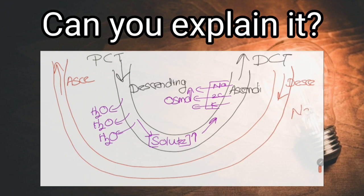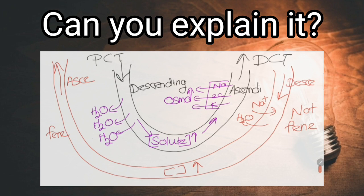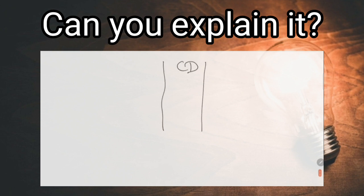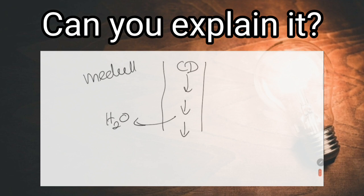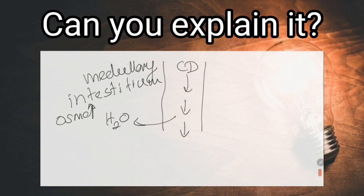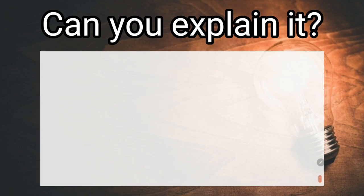The descending limb of the vasa recta is non-fenestrated; solutes enter it and water diffuses out to the interstitium, so the descending limb progressively increases in concentration. The ascending limb is fenestrated; solutes diffuse back to the medullary interstitium and water moves into the vasa recta, so blood becomes less concentrated. Therefore, the solutes recirculate in the vasa recta, and the osmotic gradient created by the countercurrent multiplier is maintained and not washed out. As collecting ducts pass through the hyperosmolar medulla, water moves out into the hypertonic interstitium, making urine concentrated.